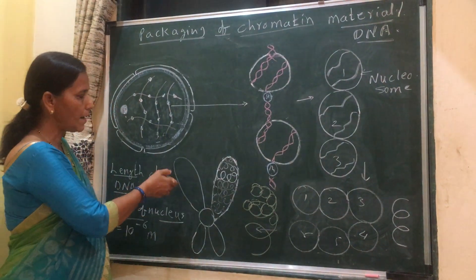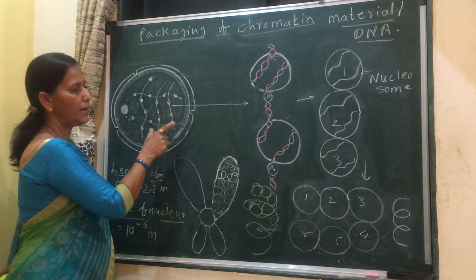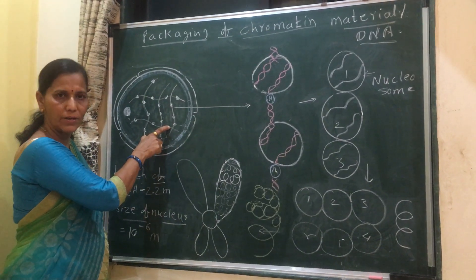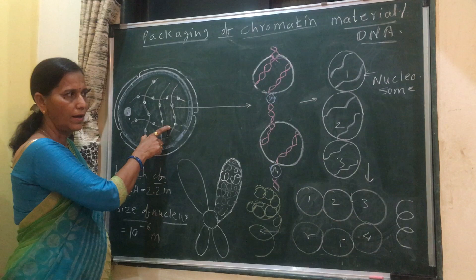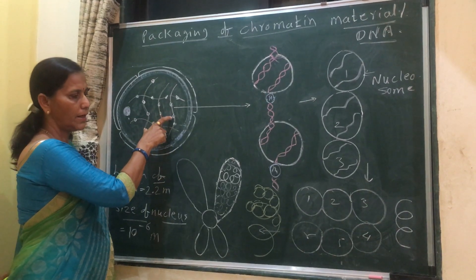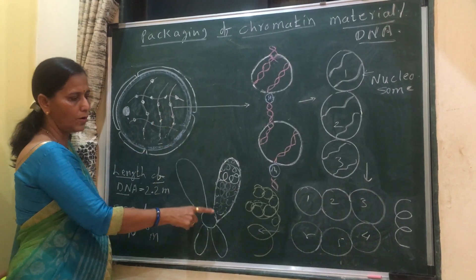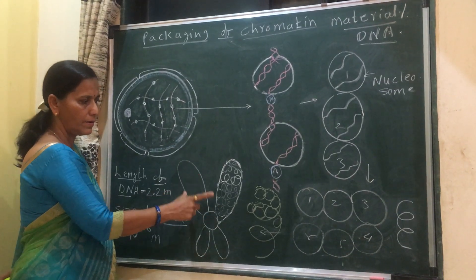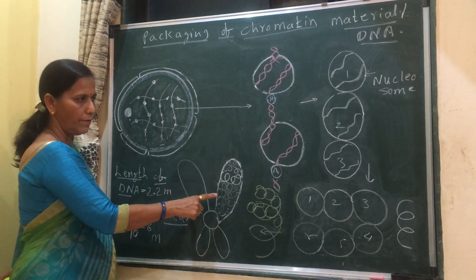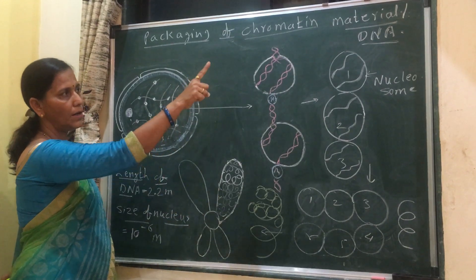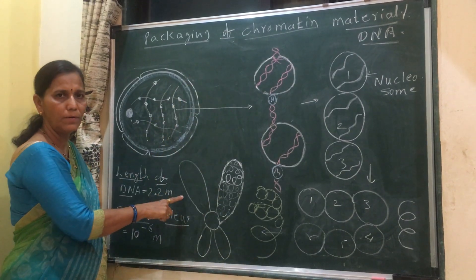Such type of chromatin reticulum is present during the interphase or resting phase of the nucleus. During cell division, this material gets coiled to form a chromosome, and this happens due to the packaging of DNA.